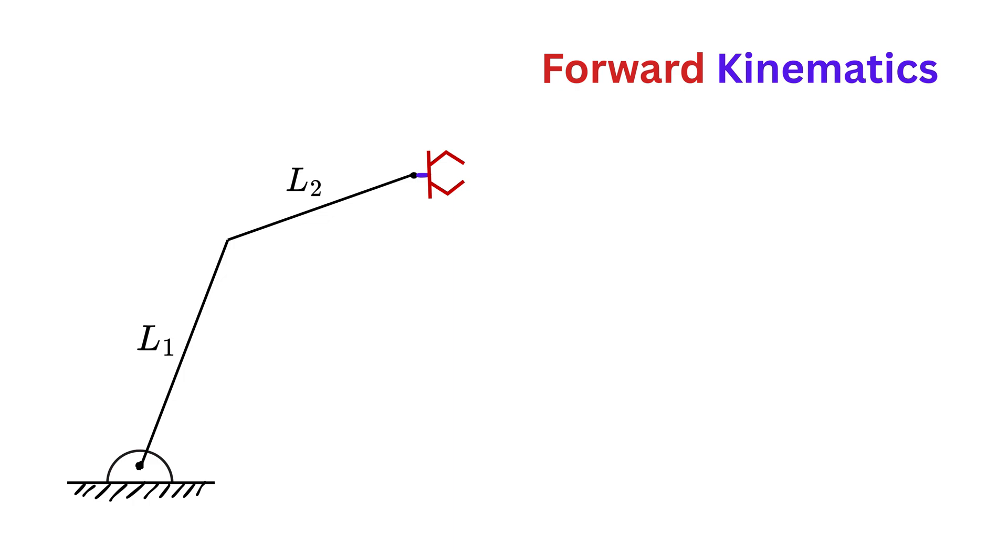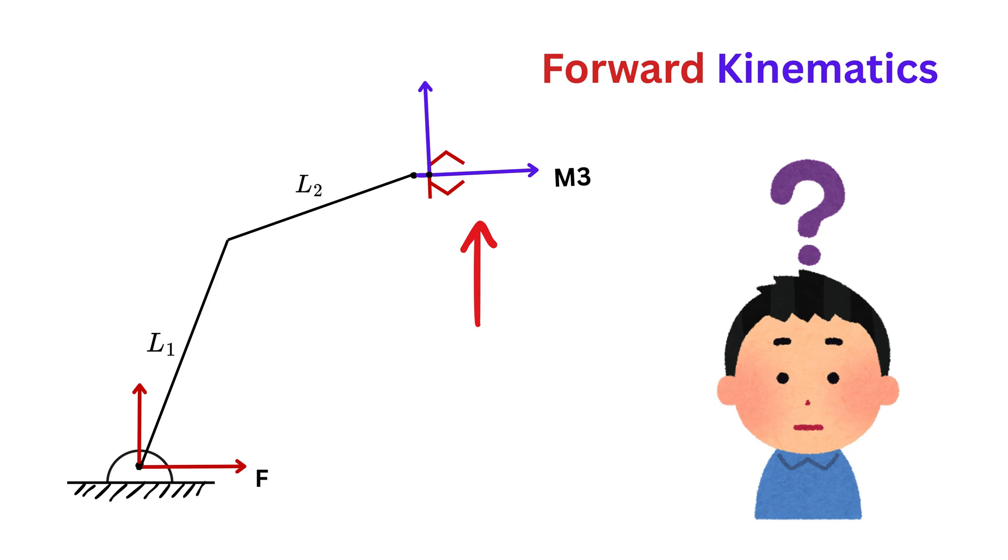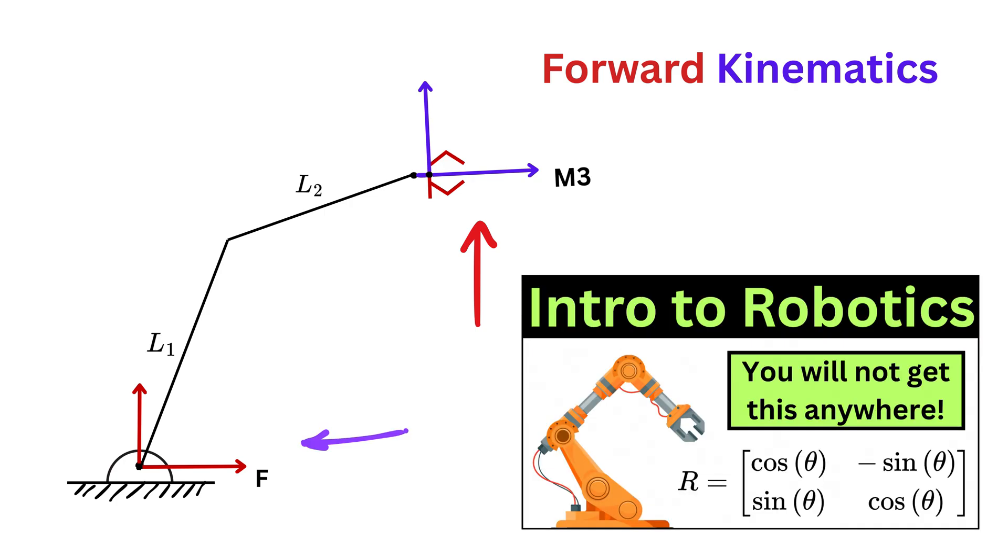Now, in order to perform forward kinematics, the very first thing you do is follow these three steps. First, draw a fixed or global frame F, which is attached to the ground, like this. Then draw the end effector frame, which will be the moving frame M3. If you don't know what F or fixed frame and M or moving frame are, then please check the previous video.